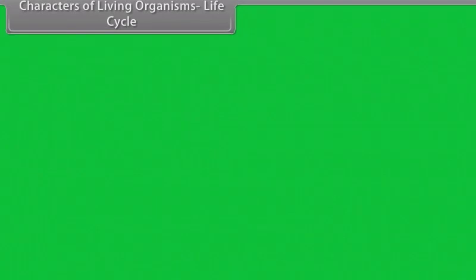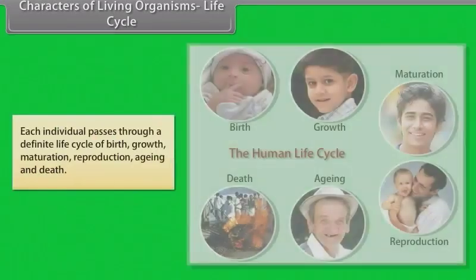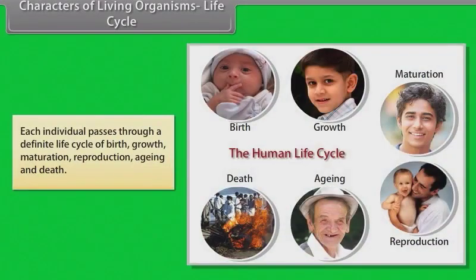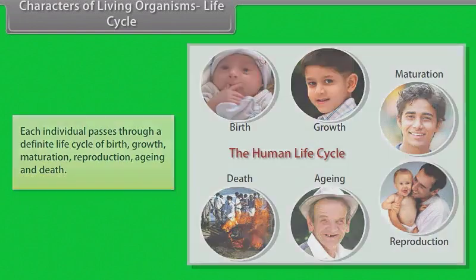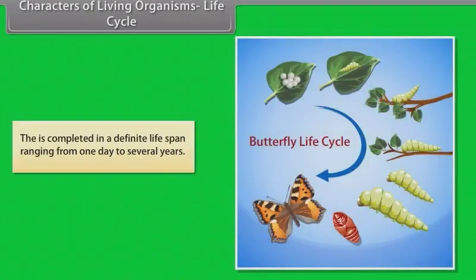Each individual passes through a definite life cycle of birth, growth, maturation, reproduction, aging, and death. This is completed in a definite lifespan ranging from one day to several years.